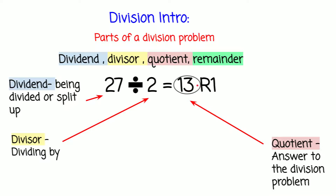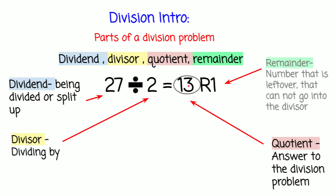Now let's see what our remainder is. The remainder is R1. The remainder is the number that is leftover that cannot go into the divisor. As you can tell by the name remainder, it cannot go into the divisor, so it's leftover. One cannot go into two because it's one less than two. And that's our four vocabulary words — the parts of a division problem we learned today.